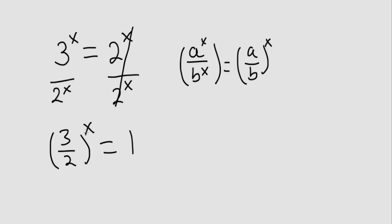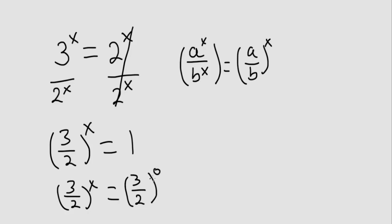So now we still need to solve for x. Let me rewrite this. I'll change this to 3 over 2 to the 0 power. Anything to the 0 power is 1, so these two are equivalent. Now that the bases are the same, we can set the exponents equal to each other. So x is equal to 0.